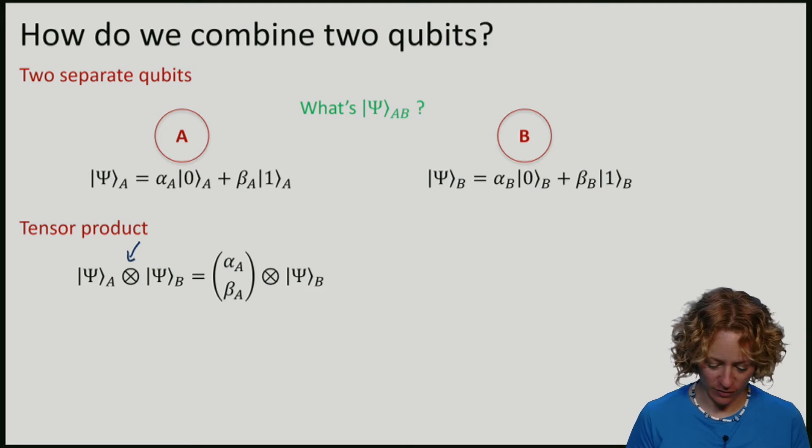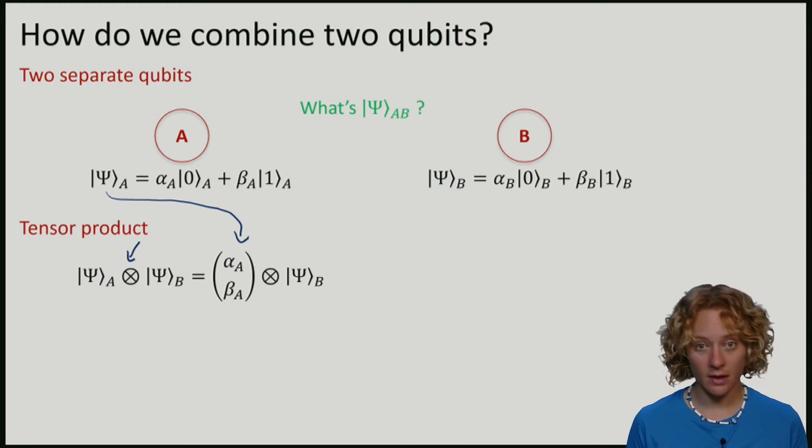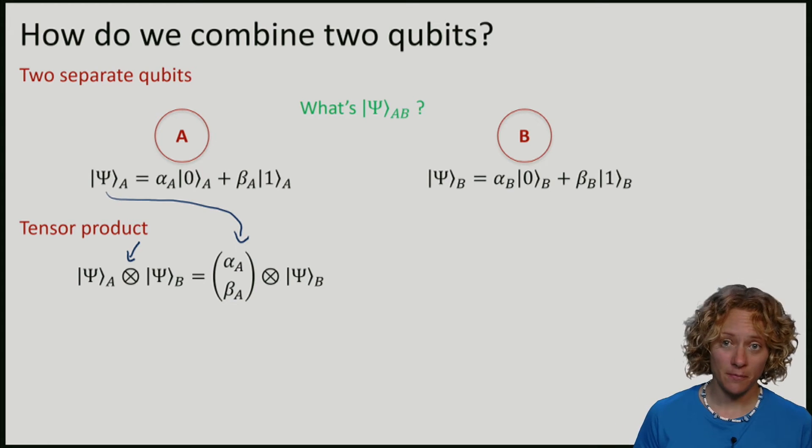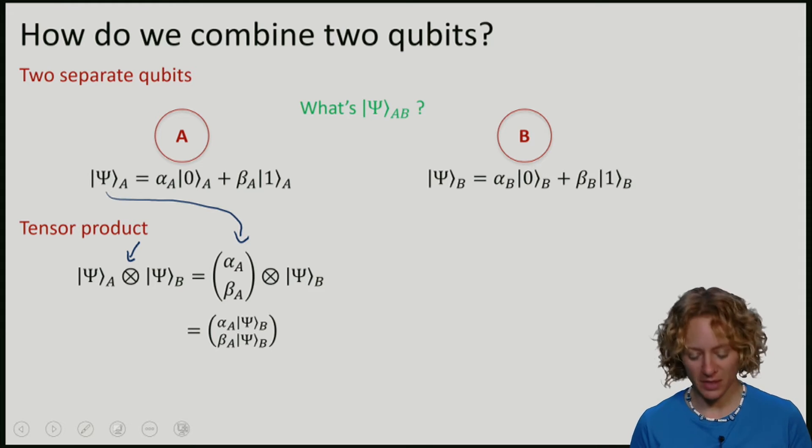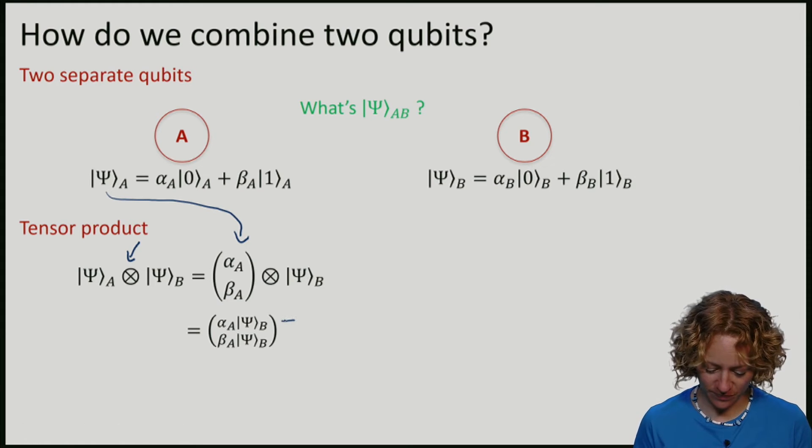If I write out the vector for psi a, and I take the tensor product with psi b, we simply take the vector psi b and we tag it onto alpha, and we tag it onto beta.